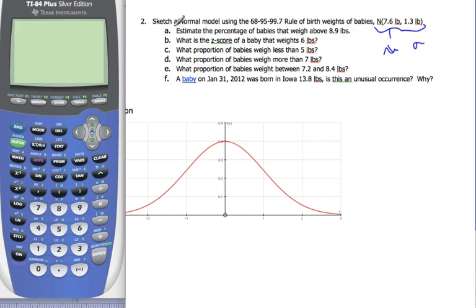So I want to sketch a model of the normal curve. Well, if this is true, I know this is 7.6. This is 1.3 more, so this distance is 1.3. So I get 8.9, and I get 10.2, and 11.5, if I can add and subtract correctly. This is 6.3, 5, and then that one's going to be 3.7 over here off the screen already.